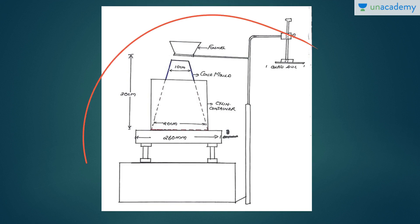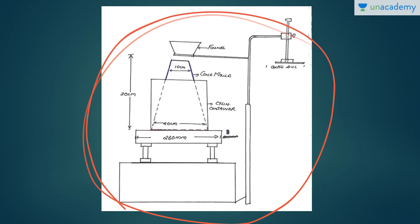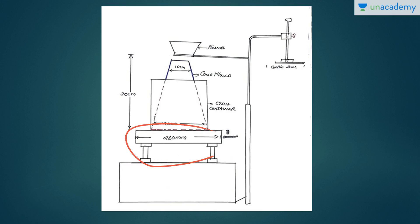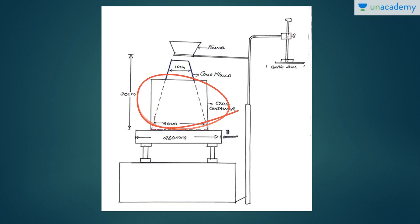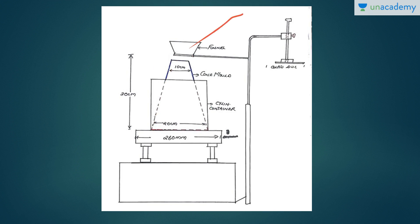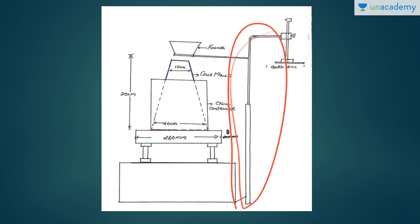This is the entire setup for the VB test. We have the base and the vibrator table — dimensions are provided. This is the cylindrical container. In this view it looks like a cuboid, but it is actually a cylinder. And this is the slump cone, or conical mold, used in this test — its dimensions are provided here. There is also a funnel and a glass disc, all connected to a swivel arm on the apparatus. Those are the major components of the setup.